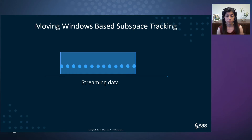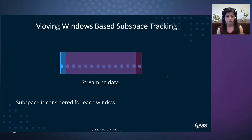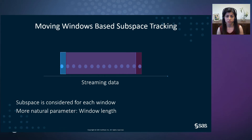In this presentation, we introduce another subspace tracking method based on the sliding window concept. With the arrival of each new observation, a new window is built based on this new observation and all the other observations in the last window, except for the oldest observation in the last window. Next, the subspace is created based on the observations in this new window. Compared to the forgetting factor-based method, a more natural parameter needs to be set — the window length — which can be a natural period of time like an hour or a day.